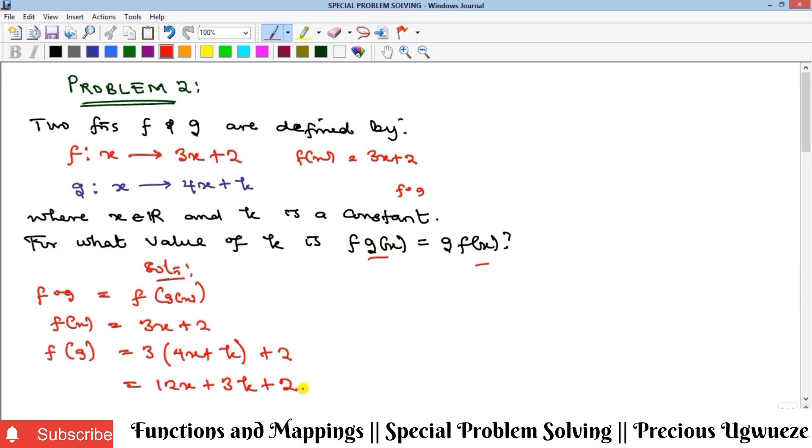The next thing is to find the right-hand side, which is g composition f. This is g(f), and our g(x) is 4x + k.